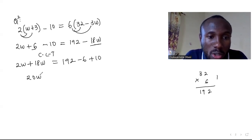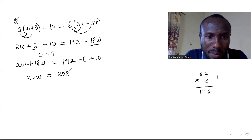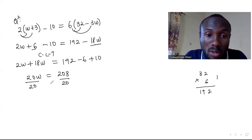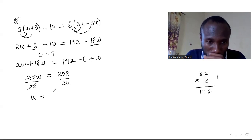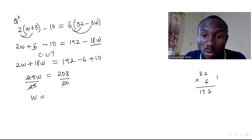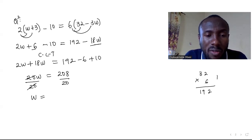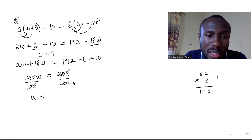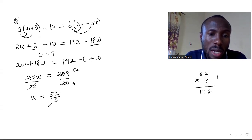So we have 20w on the left. On the right: 192, minus 6 comes over as minus 6, plus 10 comes over as plus 10, giving 208. Divide both sides by 20. We can simplify by dividing numerator and denominator by 4: 4 divides 20 giving 5, and 208 divided by 4 gives 52. So w equals 52 over 5.